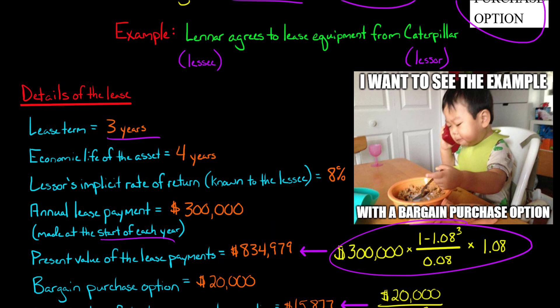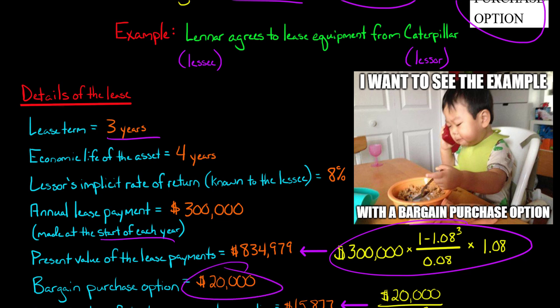But that is not going to be our initial lease liability — that's just going to be part of it, because this lease contains a bargain purchase option. A bargain purchase option is just an option that the lessee has the right to buy the property they're leasing right from the lessor. They have the right to buy it at the end of the lease — in this case for $20,000 — and it's reasonably certain that they're going to exercise that option.